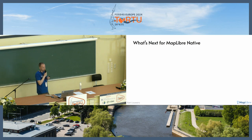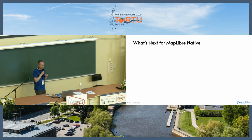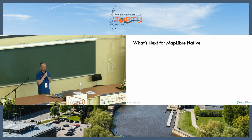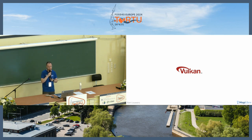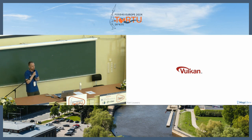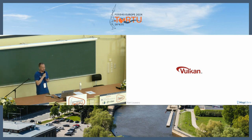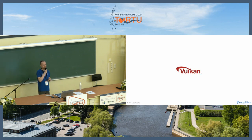I have one more minute to talk about what's next for MapLibre Native. The development of another rendering backend has actually been kicked off last month, which is Vulkan. What's interesting about Vulkan is that it's heavily used in the automotive industry. So you might at some point have a car where MapLibre Native is running, and I think that's pretty cool. Thank you very much for your time, and now we have some time for discussion.